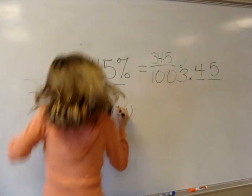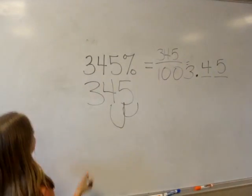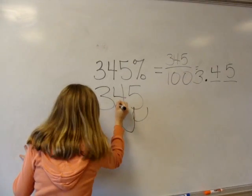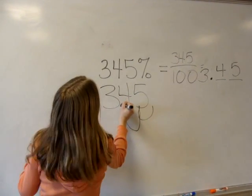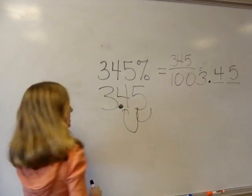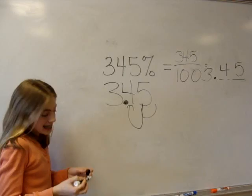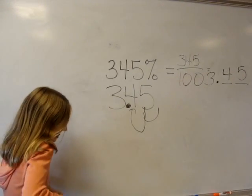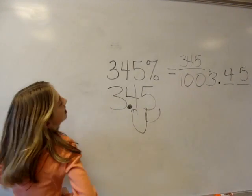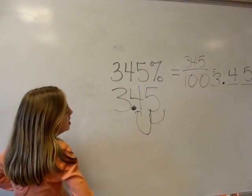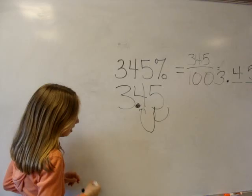Ready? To the left! We're putting our new decimal point in there, and our decimal is 3.45. 345 percent is larger than a hundred percent, so it's going to be larger than one.